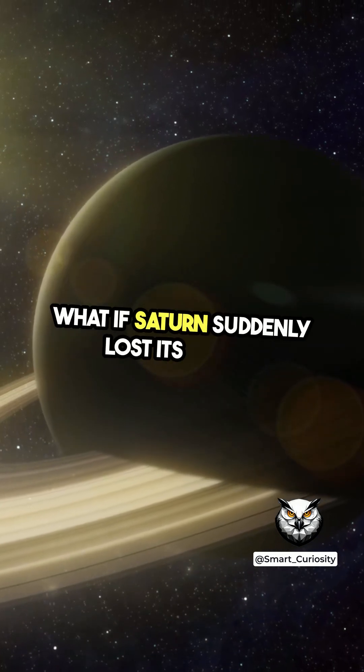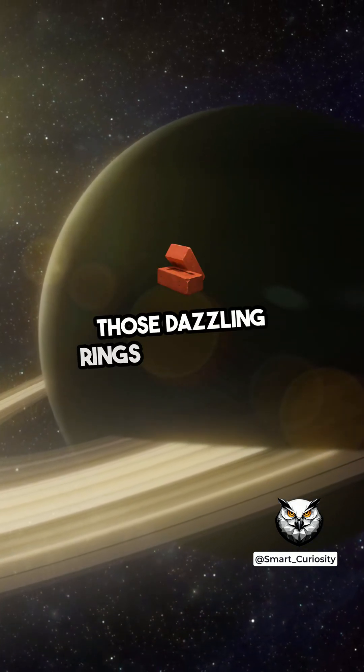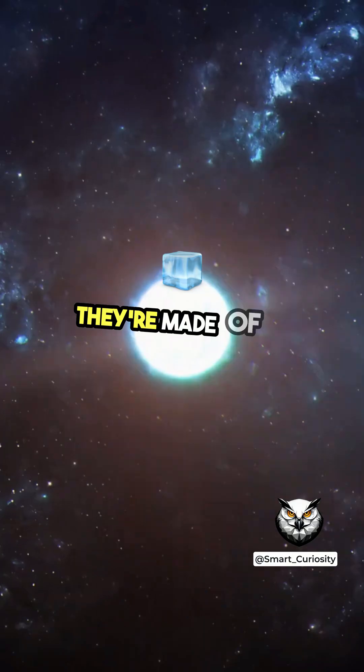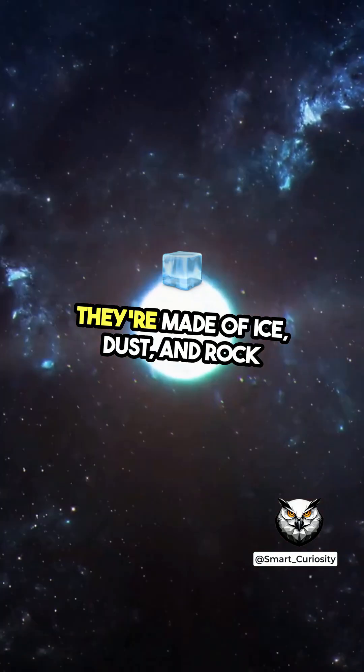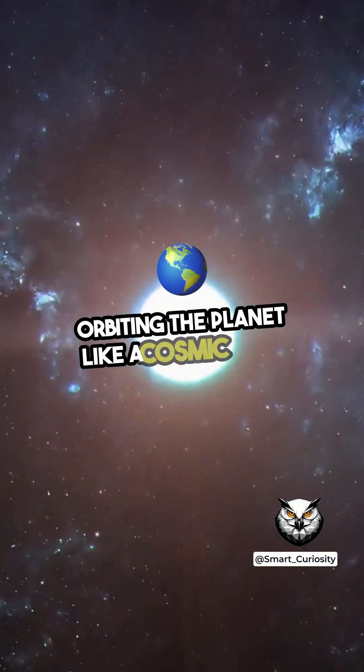What if Saturn suddenly lost its rings? Those dazzling rings aren't solid. They're made of ice, dust, and rock, orbiting the planet like a cosmic halo.